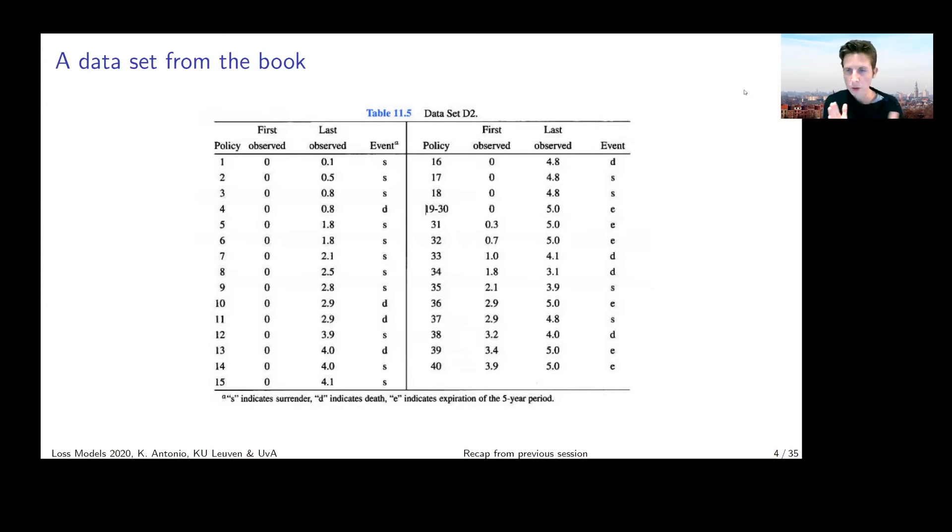We observe these policyholders during a certain time interval indicated by first observed and last observed. We observe certain events that can happen during the lifetime of this policyholder. Whenever we have the notation S, it means the policy is canceled because the client decides to surrender or lapse the contract. Whenever there is a D, it means we observe the death of our policyholder. Whenever there is an E, it means the contract expires.